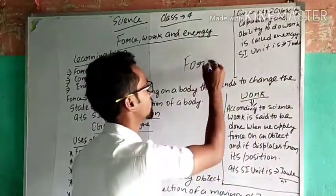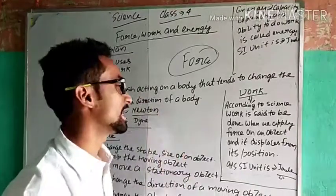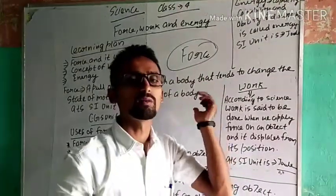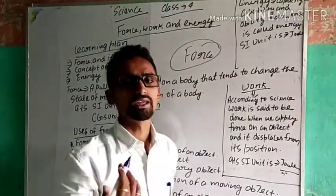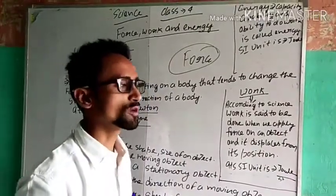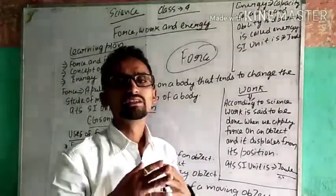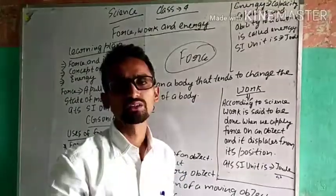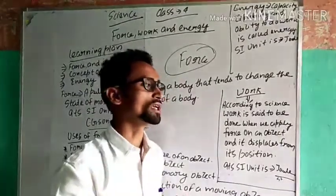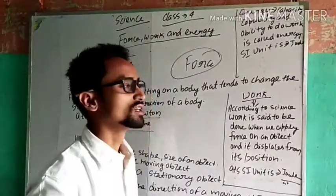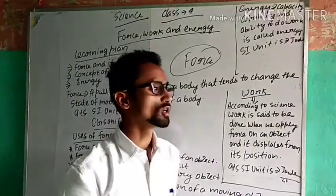First you have to know about what is force and the terms related to force. Force means a pull or push that is acting on a body that can change the shape and size, as well as the state of motion and direction of a moving object. It means force is a physical phenomenon that can change the state of rest, state of motion, shape and size, as well as the moving direction of the body. The SI unit of force is Newton and CGS unit of force is Dain.